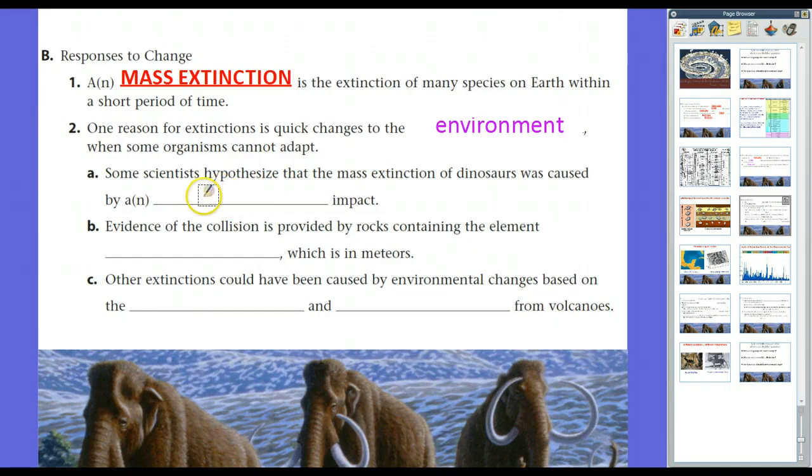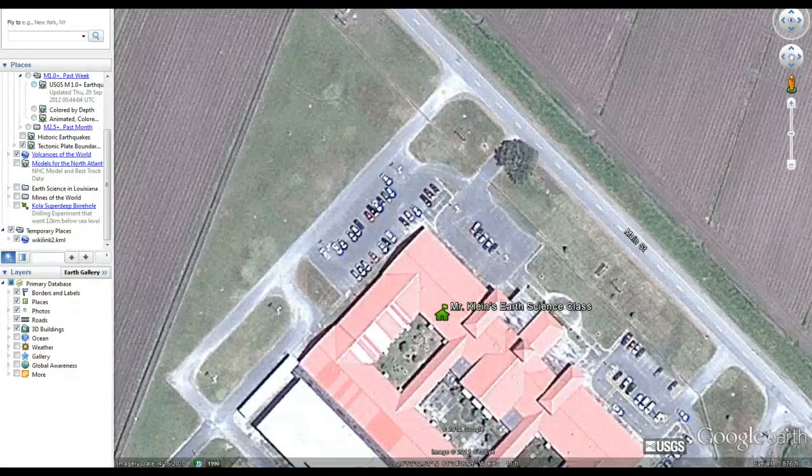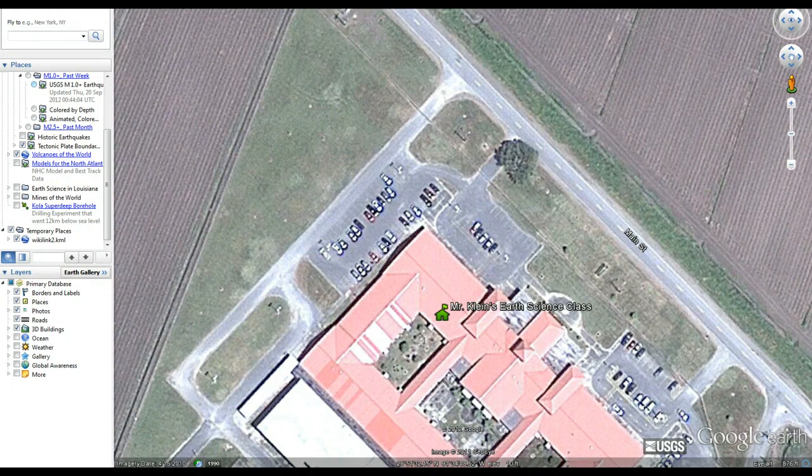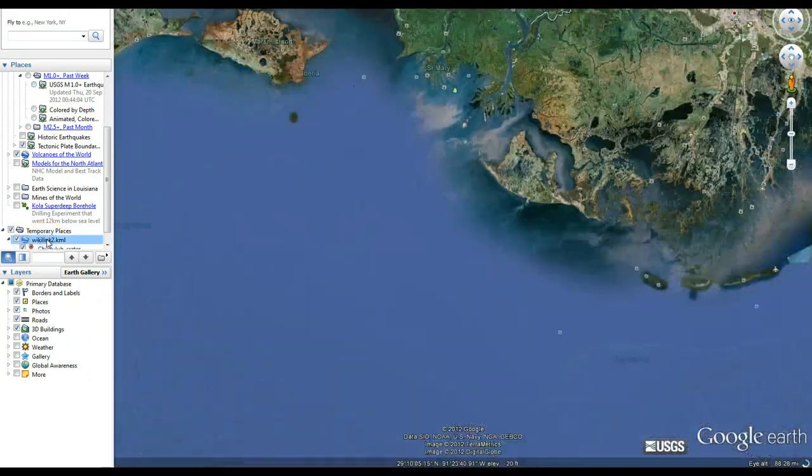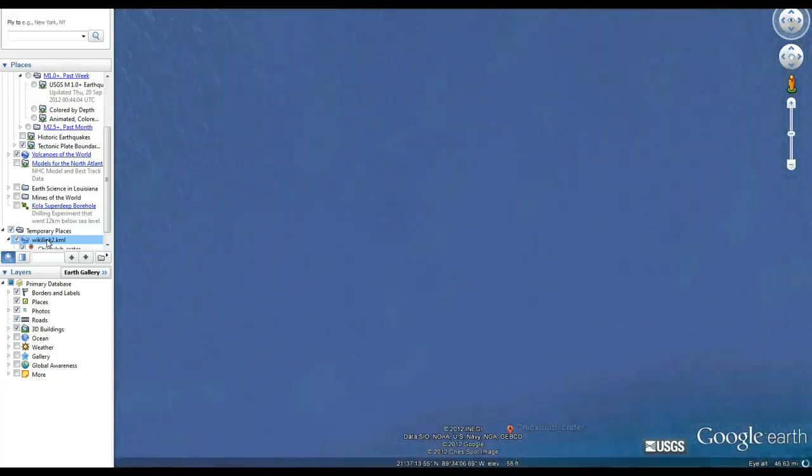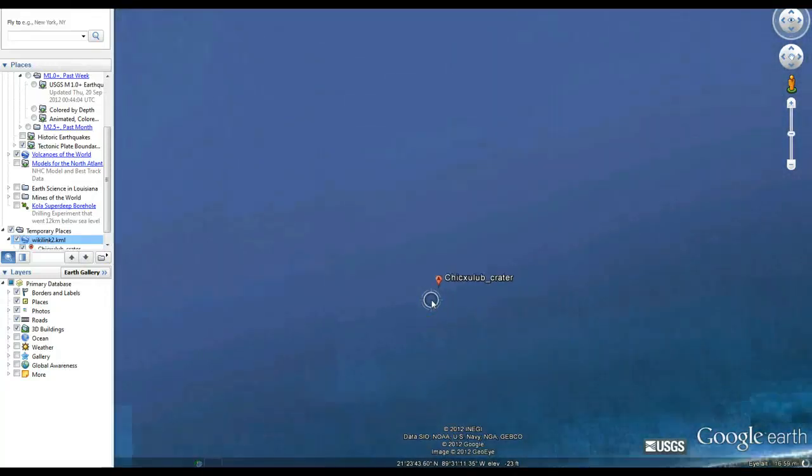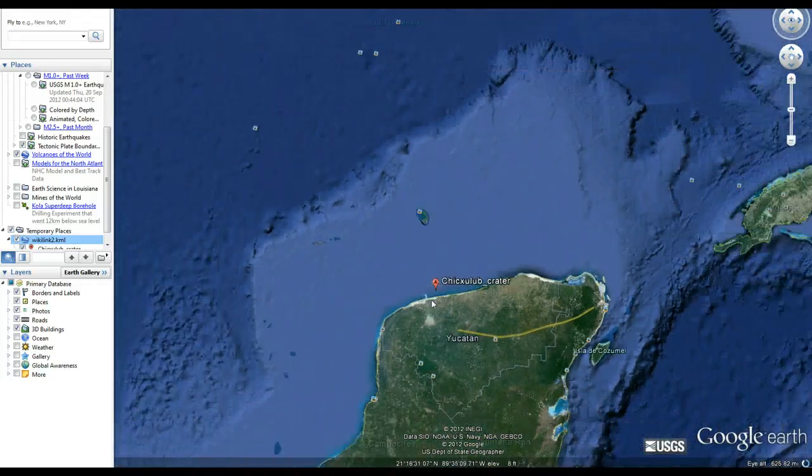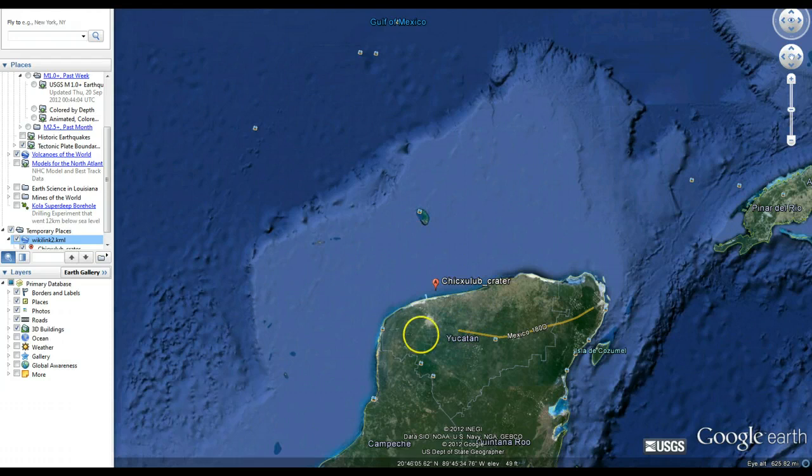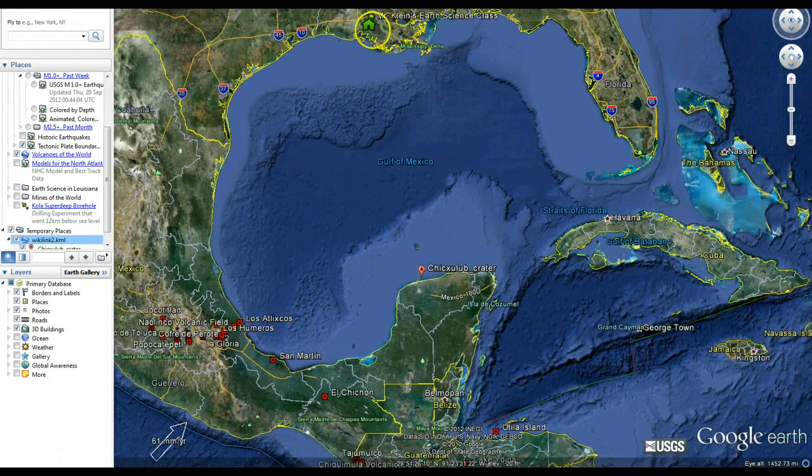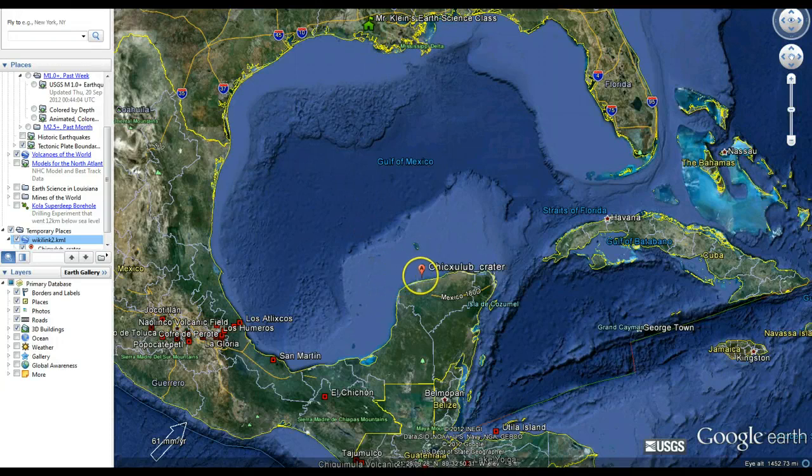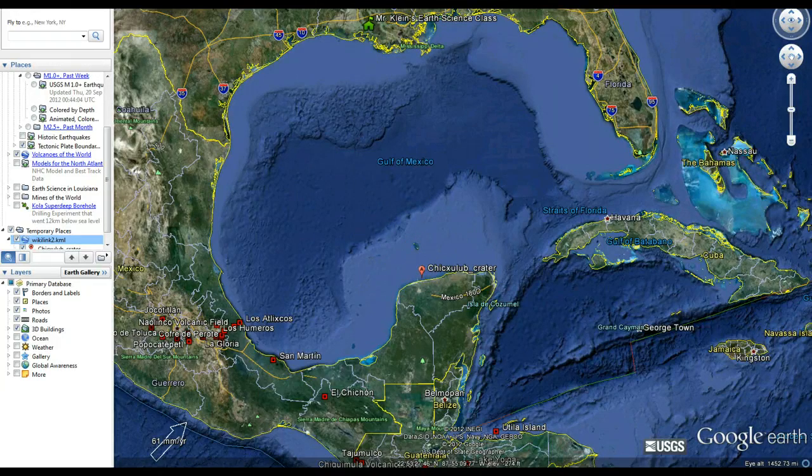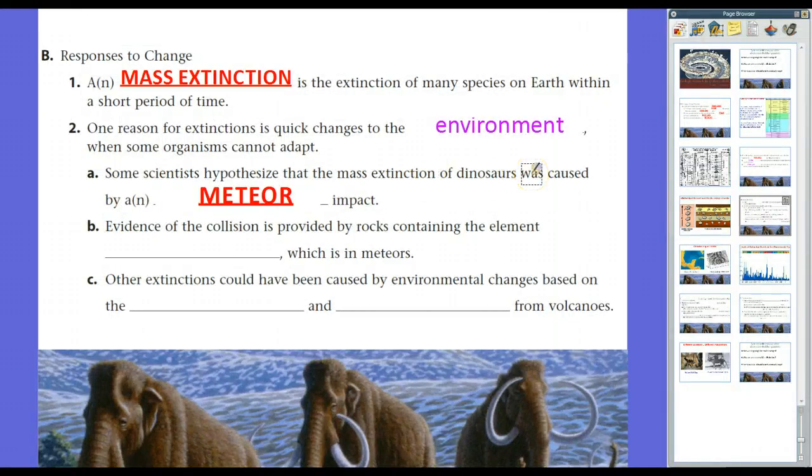Some scientists hypothesized that the mass extinction of dinosaurs was caused by a meteor impact. Let's hop on Google Earth for a minute and let's look. Here we are at school, and essentially there's a crater which you can't see, but scientists discovered it—actually oil field workers discovered it—off the Yucatan Peninsula. It's in this general vicinity. In fact, if I zoom out, you see where our class is here in South Louisiana. Here's the crater. It's not too far from us. How did scientists figure this out?